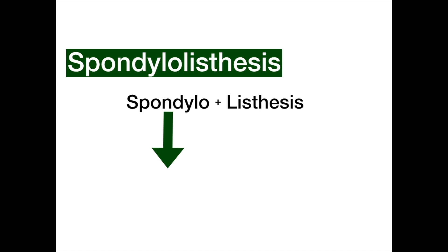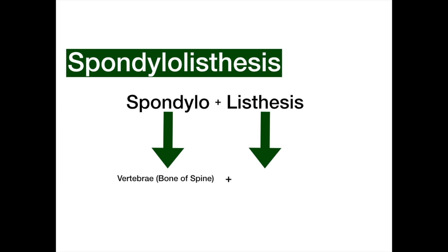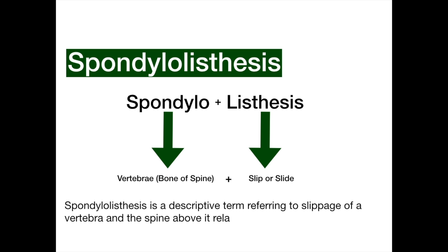Spondylolisthesis is a word where two words come together: spondylo and lysthesis. Spondylo means vertebrae — the bone of the spine — and lysthesis means slip. So spondylolisthesis refers to the slippage of one vertebra on another.